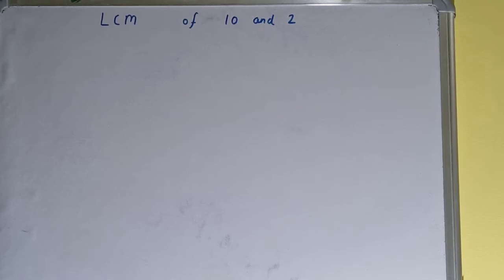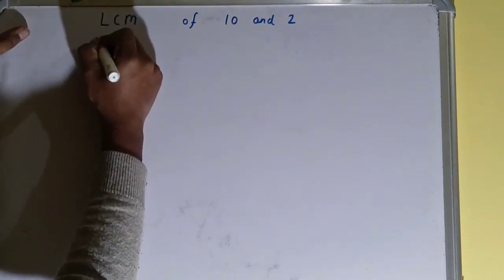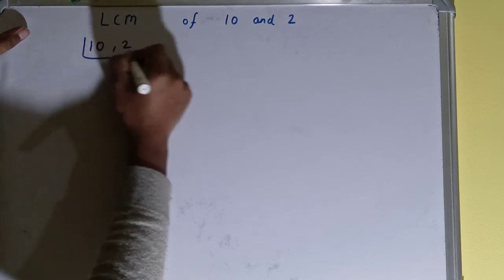Hello friends, and in this video I'll be helping you with the LCM of the numbers 10 and 2. Let's start. To find it out, we need to write both the numbers like this: 10 comma 2.